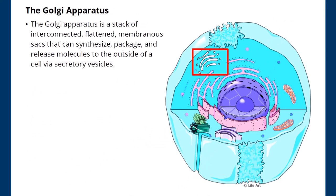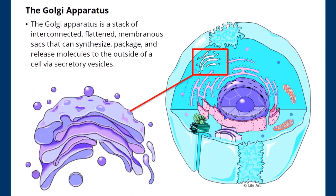The Golgi apparatus is a stack of interconnected, flattened membranous sacs that can synthesize, package, and release molecules to the outside of a cell via secretory vesicles.